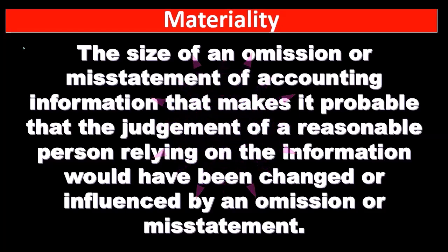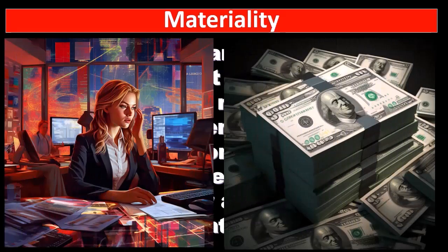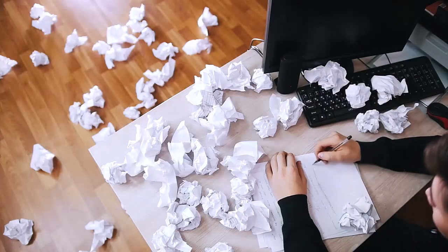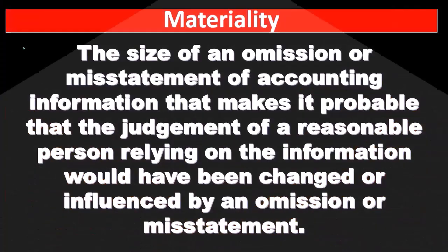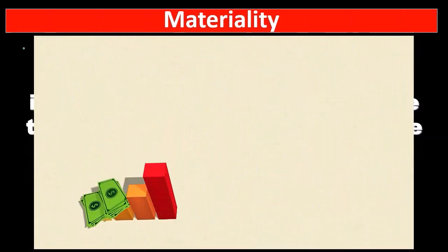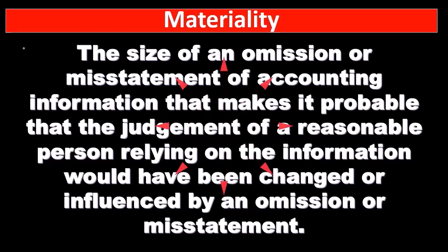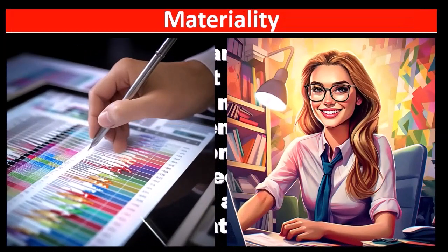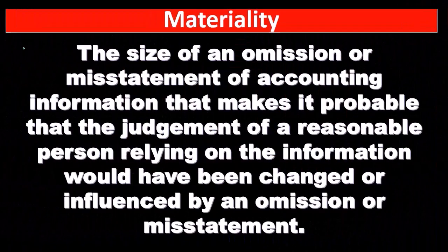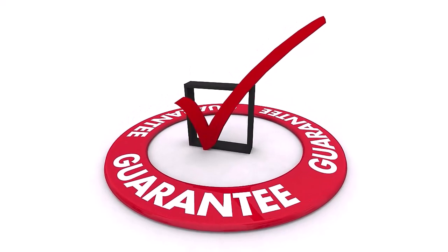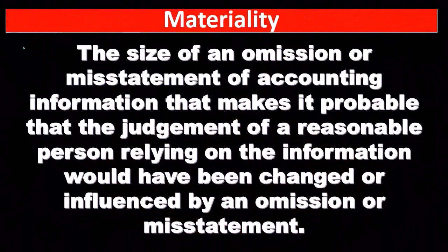When we think about materiality in financial statements, we use a reasonable person standard. The end users we're thinking about are typically investors. We want to make sure there's not a material misstatement, or at least reduce the likelihood of one, which could result in investors making decisions — like investing — when they would not have done so had the mistake not been there. The audit provides a degree of assurance that material errors would have been caught, giving users a higher degree of trust in the financial statements.